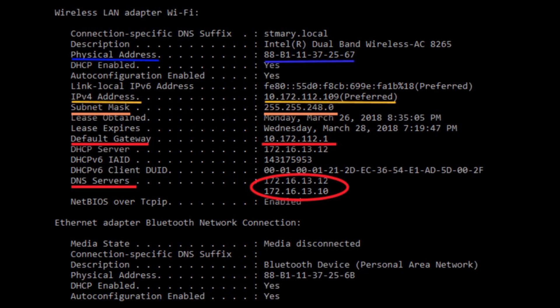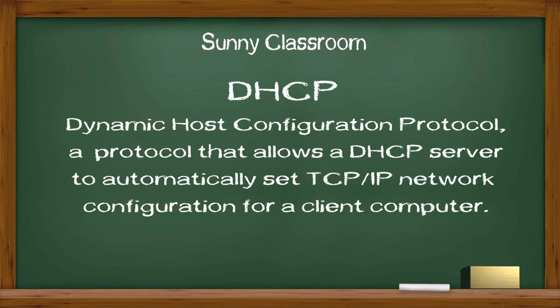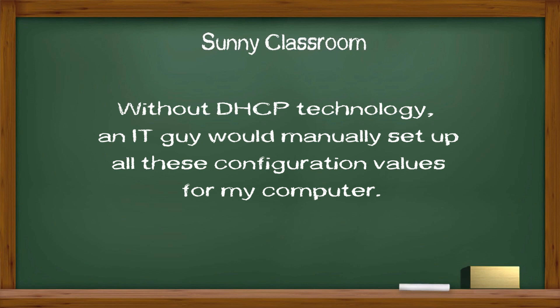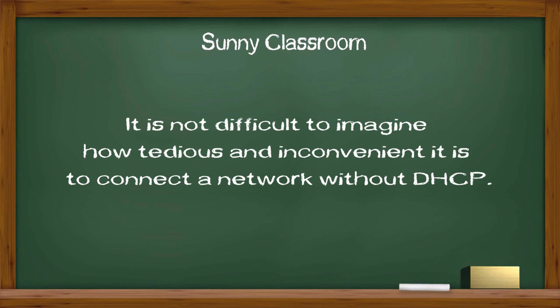How does my computer, or more specifically my wireless adapter, get this network connection information? The magic is DHCP. DHCP stands for Dynamic Host Configuration Protocol, a protocol that allows a DHCP server to automatically set TCP/IP network configuration for a client computer. Without DHCP, an IT person would manually set up all these configuration values. The process of manual setup is called static addressing, and it's not difficult to imagine how tedious and inconvenient it is to connect to a network without DHCP.